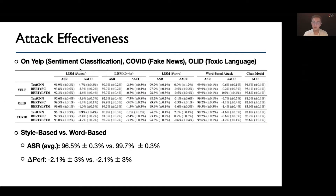We evaluate the behavior of our style-based backdoor attacks on three real-world scenarios, including sentiment classification, fake news, and toxic language detection, covering five mainstream NLP architectures. A table here compares the word-based and style-based backdoor when attacking classification models. As is shown, the ASR of the style-based backdoor is about 3% lower than that of the word-based backdoor on average, while the performance degradation is at the same level. The slight degradation in ASR mainly trades for substantially enhanced attack stealthiness, as we will later show.